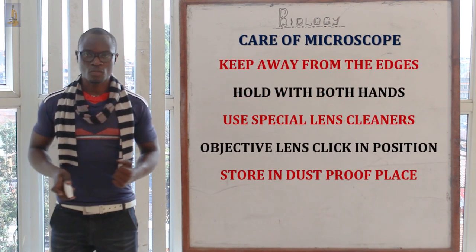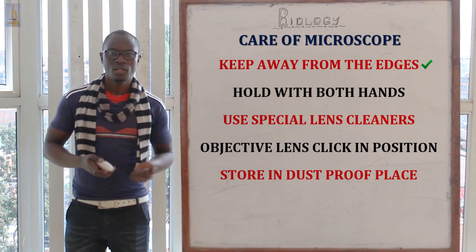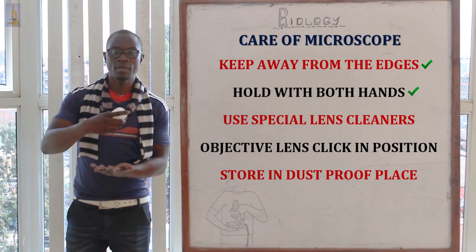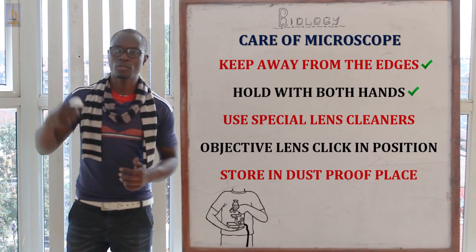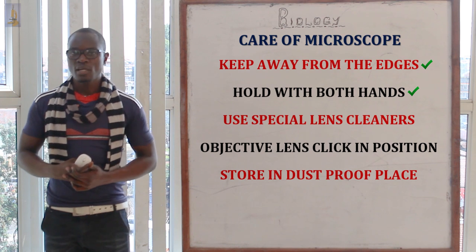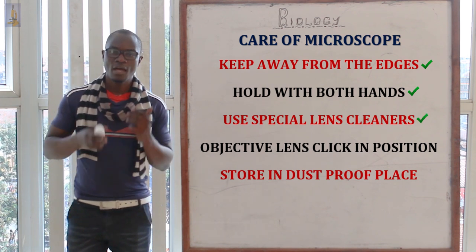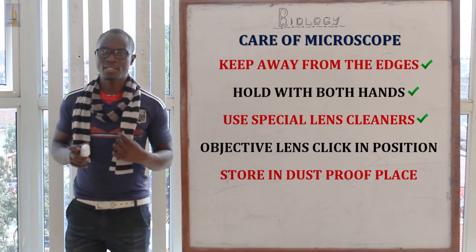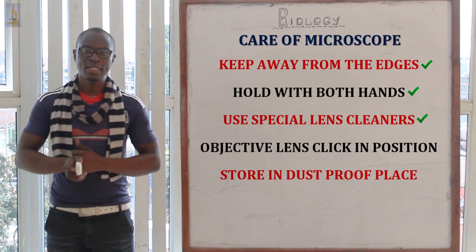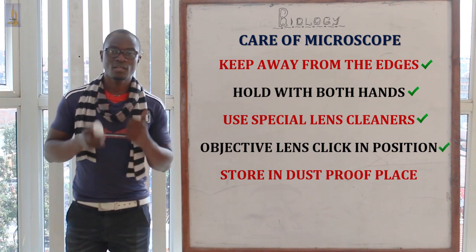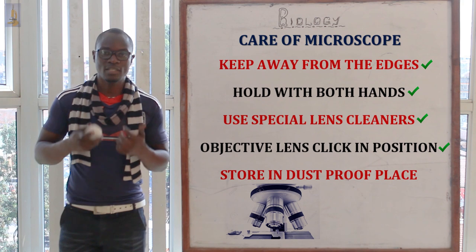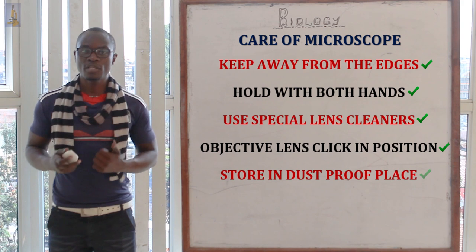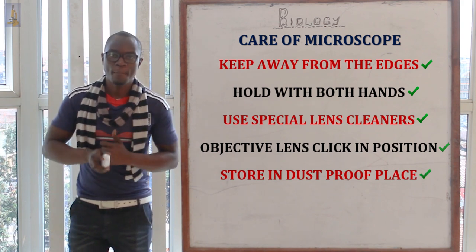To take care of the microscope: keep it away from the edges of the bench and away from small children. Always hold the microscope with both hands — never with one hand. Clean the lenses only with special lens cleaners, not regular cloth. Make sure objective lenses have clicked into position before use, and always store the microscope in a cool, dry place.